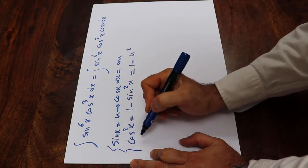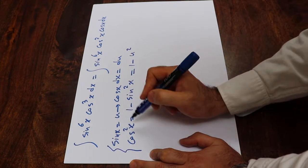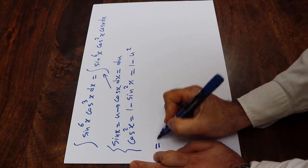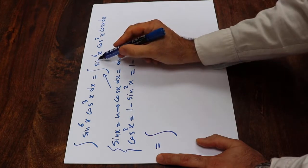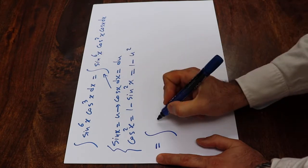So now all you need to do is to substitute this expression into this integral. And if you do that you'll get this will be equal to the integral of, instead of sine 6x I write u to the power of 6.